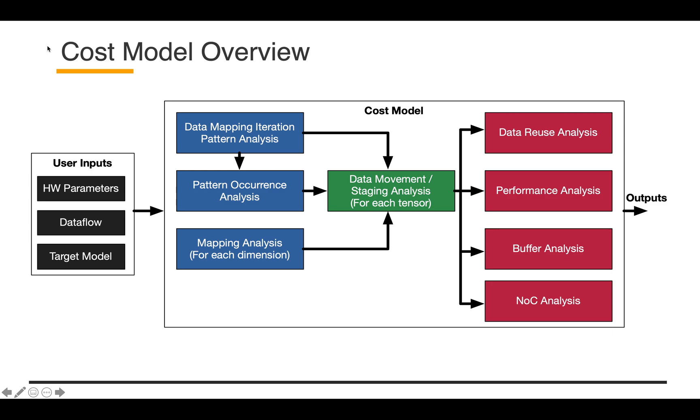This is a high-level overview of the cost model. As inputs, users will provide the hardware parameters, data flow and mapping, and target model. In the cost model, we have those components. If you take a look at the blue squares, it has several analysis engines like data mapping, iteration pattern analysis, pattern occurrence analysis, and mapping analysis.